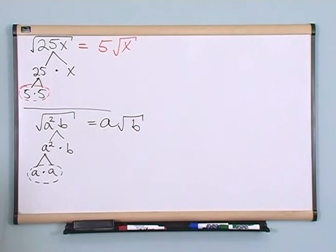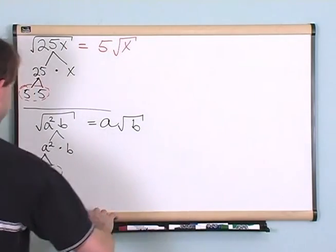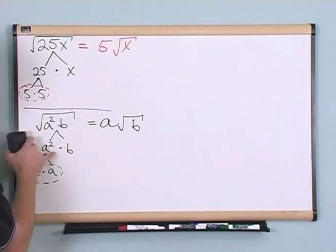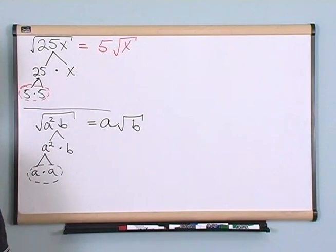And that's about all I can do with that. Multiply whatever's under there, a squared times b, a squared is a times a, and you just look for pairs.